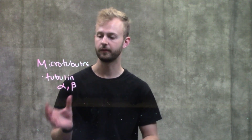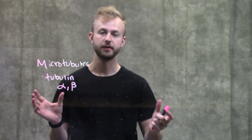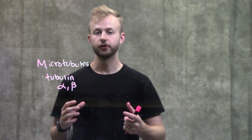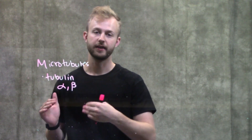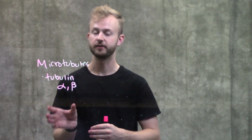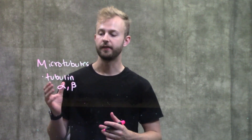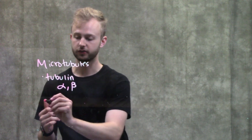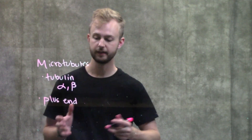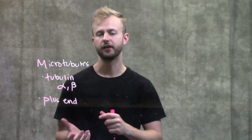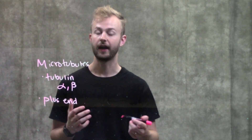The microtubule has two ends, and one end is different from the other. At one end, you have the ability to rapidly add and remove tubulin dimers — that's polymerization and depolymerization — and that end is called the plus end. The minus end is where it's more difficult to add or remove things, so it doesn't change as quickly.